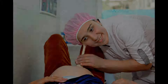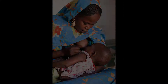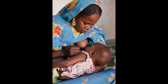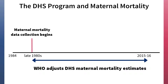The DHS program estimates have always been, and continue to be, a major source for the maternal mortality estimates regularly issued by WHO. WHO applied assumptions to DHS estimates released prior to 2016 to adjust for the differences between the two definitions in order to generate their maternal mortality estimates.